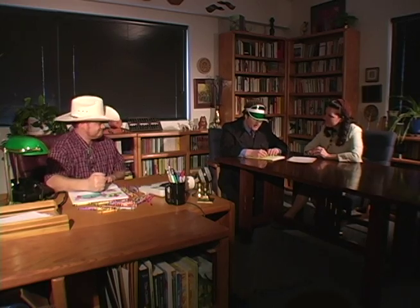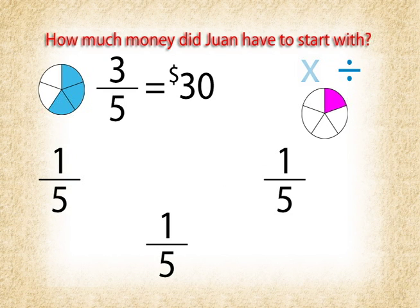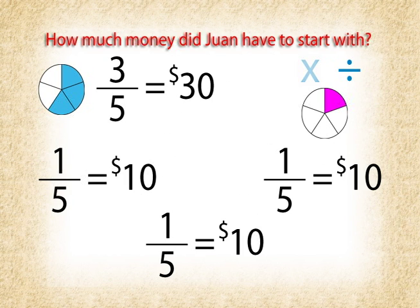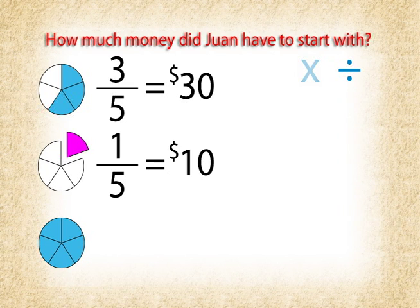Divide by three. That's right, Tex. Thanks for helping us out. We need to divide both the three-fifths and the thirty dollars by three. So three-fifths divided by three is one-fifth, and thirty dollars divided by three is ten dollars. So one-fifth of his money is equal to ten dollars. But we can't stop yet. We don't need to know what only one-fifth of his money is equal to. We really need to know what five-fifths, or all of his money, is equal to. But how would we go from one-fifth up to five-fifths?